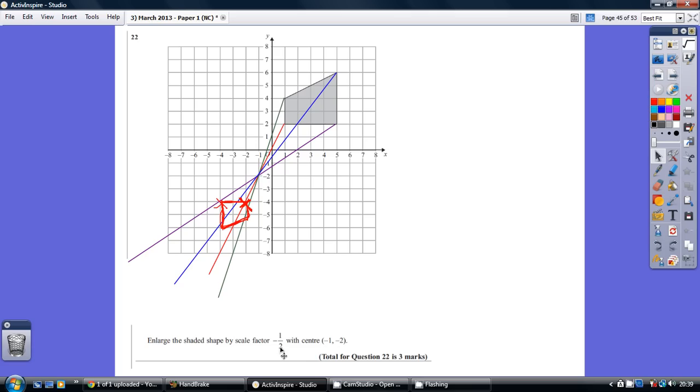Scale factor half just means it's got to be half the size, and normally we would just go half as far away and make it half the size, which would be fine. The bit that made this question different was the fact that it was minus a half, so that actually throws the enlargement in the opposite direction.